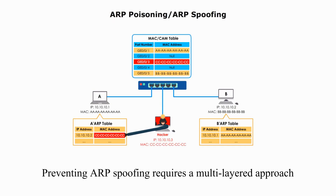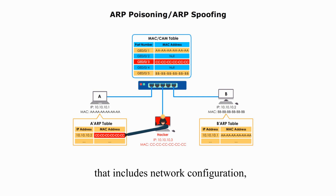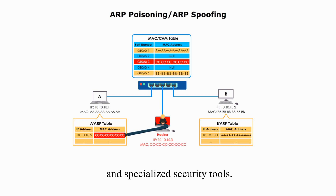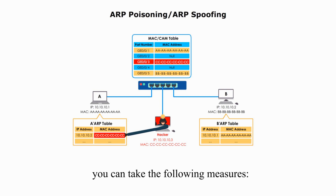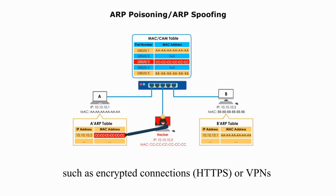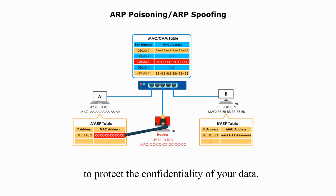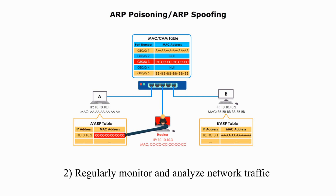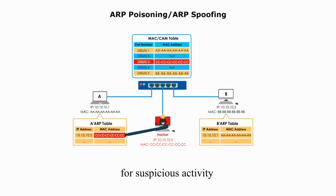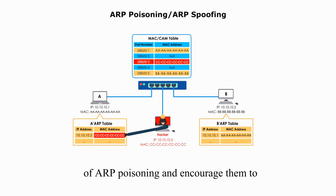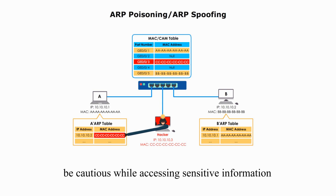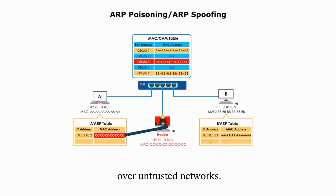Preventing ARP spoofing requires a multi-layered approach that includes network configuration, security best practices, and specialized security tools. To protect against ARP poisoning attacks, you can take the following measures: use secure network protocols such as encrypted connections, HTTPS, or VPNs to protect the confidentiality of your data. Regularly monitor and analyze network traffic for suspicious activity. Educate network users about the risks of ARP poisoning and encourage them to be cautious while accessing sensitive information over untrusted networks.